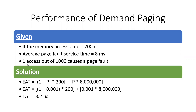Now a value of P is required. One access out of a thousand causes a page fault, so P equals 1 over 1000, which equals 0.001. Substituting this probability into the formula gives us an effective access time of approximately 8.2 microseconds.